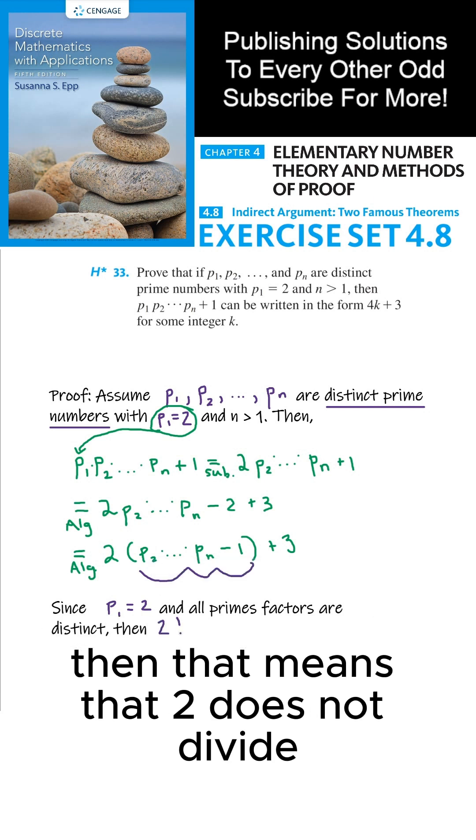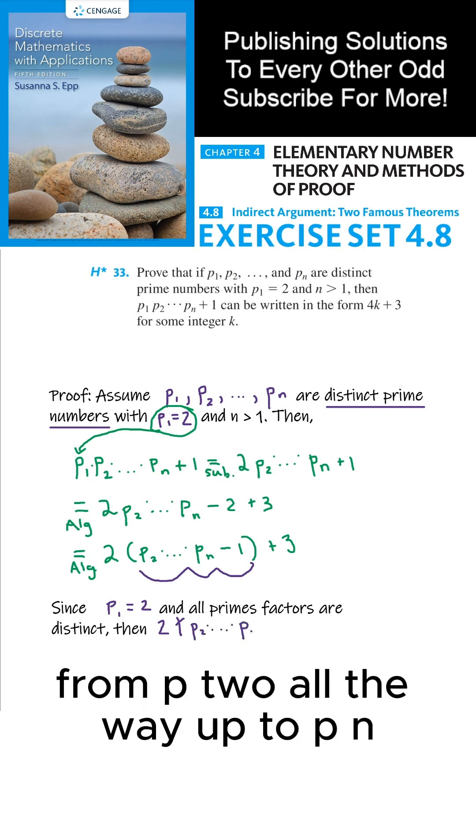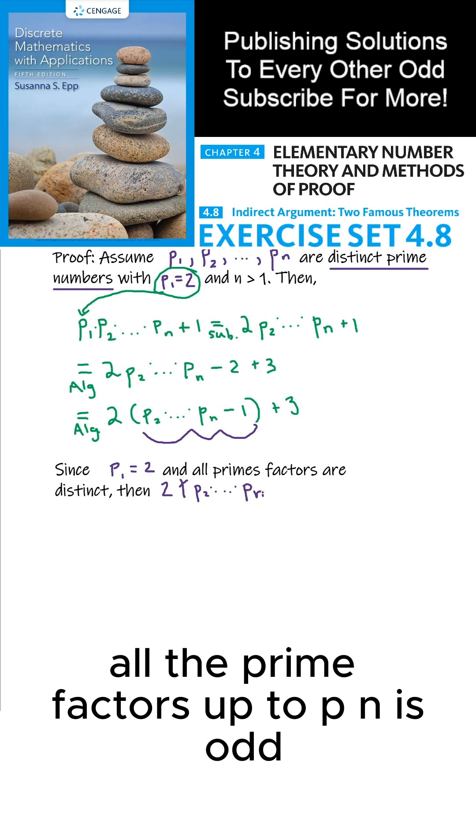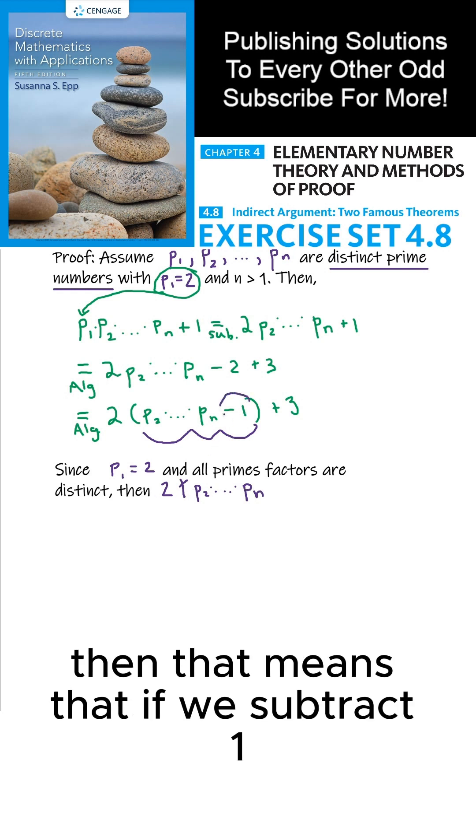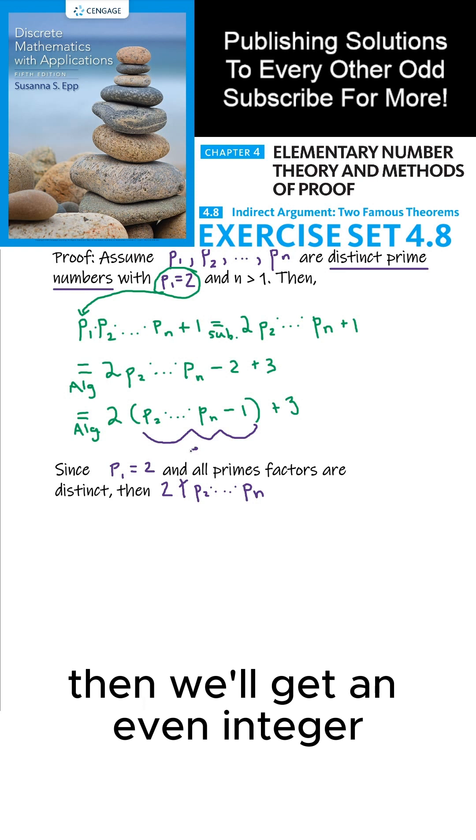then that means that 2 does not divide the product of prime factors from p₂ all the way up to pₙ. So that means that p₂ times all the prime factors up to pₙ is odd. Then that means that if we subtract 1 from the product of primes, that's odd, then we'll get an even integer.